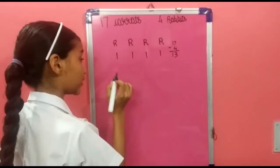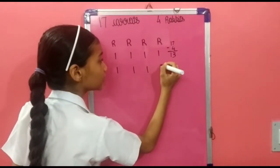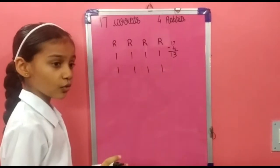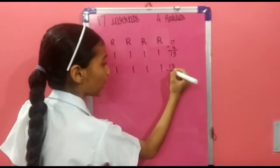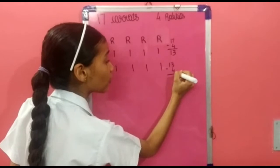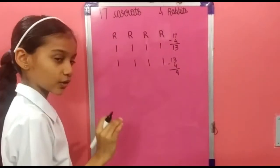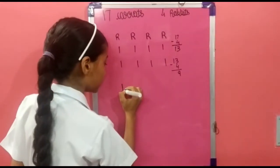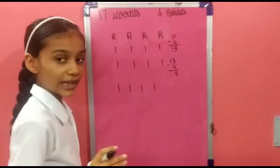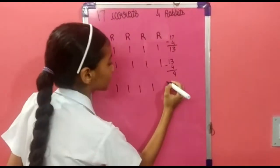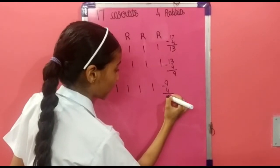Again, you give 1 carrot to each rabbit friend. Now you will be left with 13 minus 4, that is equal to 9. Again, you give 1 carrot to each rabbit friend. Now you will be left with 9 minus 4, that is equal to 5.